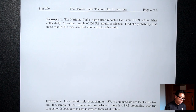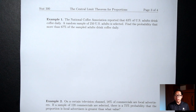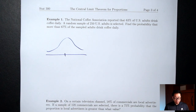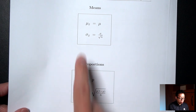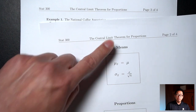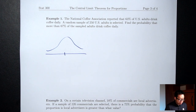Example 1: The National Coffee Association reported that 63% of U.S. adults drink coffee daily. A random sample of 250 U.S. adults is selected. Find the probability that more than 67% of the sampled adults drink coffee daily. First, draw the normal distribution picture. Before putting the mean in the middle, decide: is this a mean or proportion situation? Since the question doesn't contain the words 'mean' or 'standard deviation,' this is a proportion question.